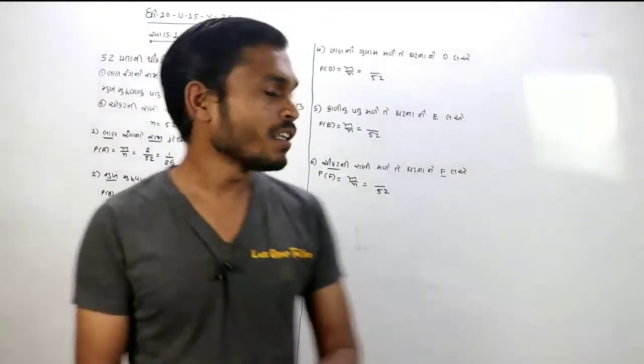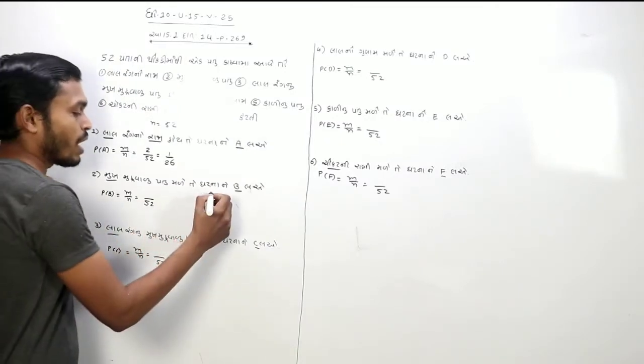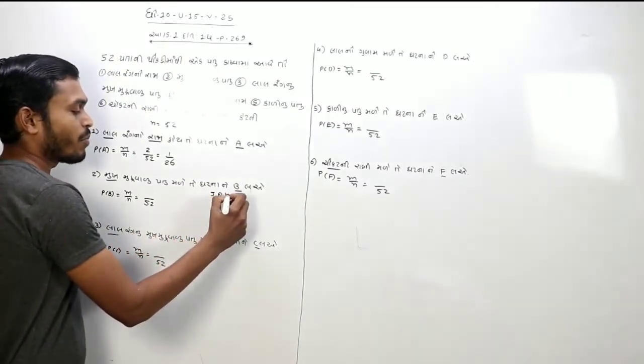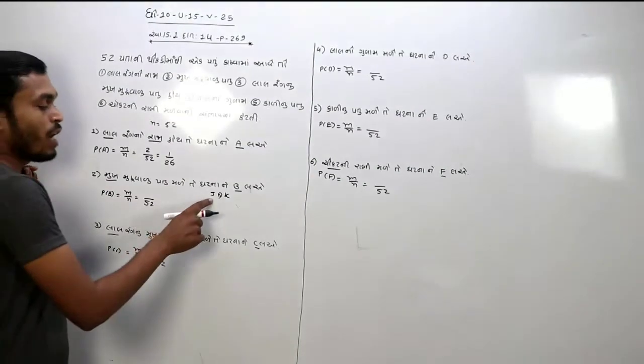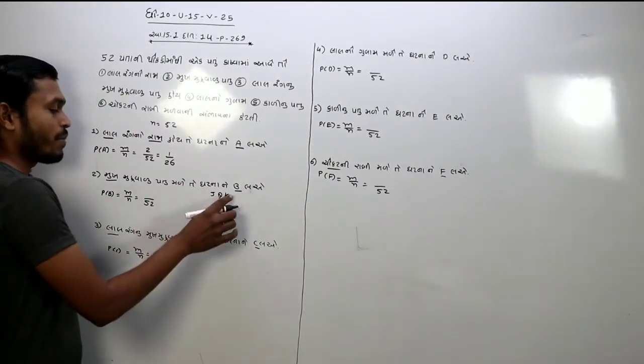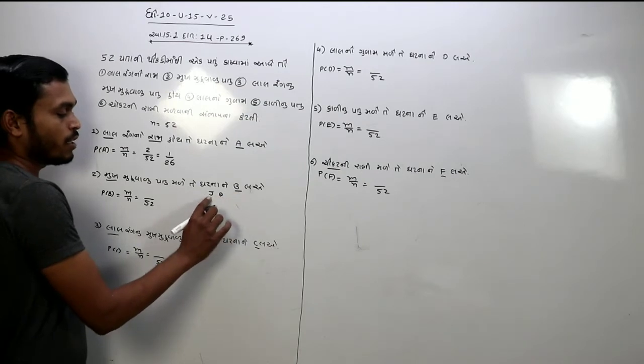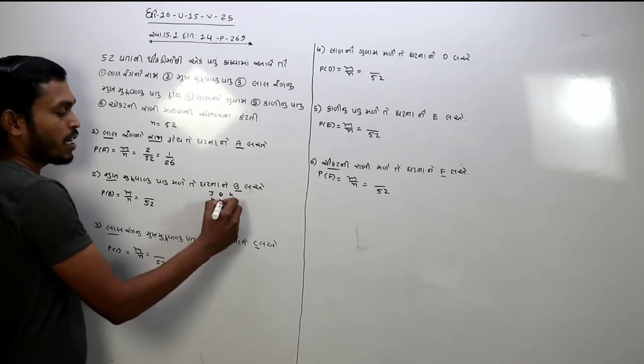તેયાર બાદ આપણે શુકે છે મુખ મુદ્રવાળ મુખ મુદરવાળુ એટલે એક ચાર પતા હોય લએ ચાર તરી 12 ટોટલ પતા થસે